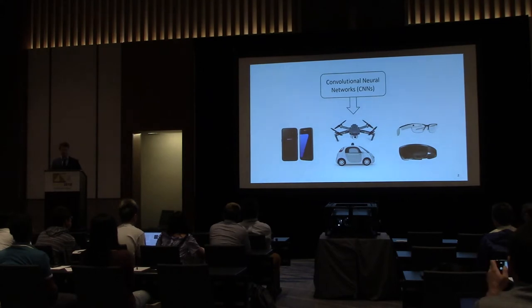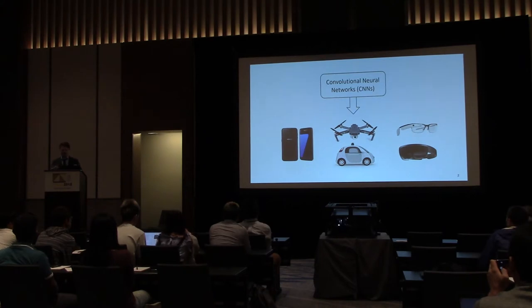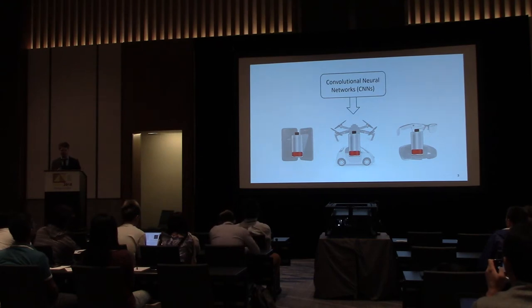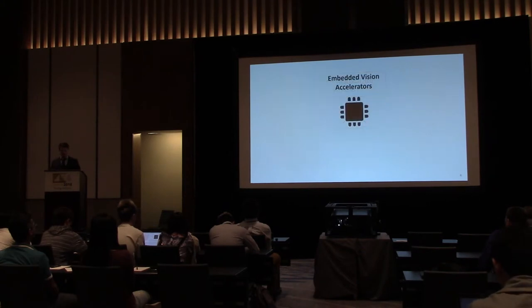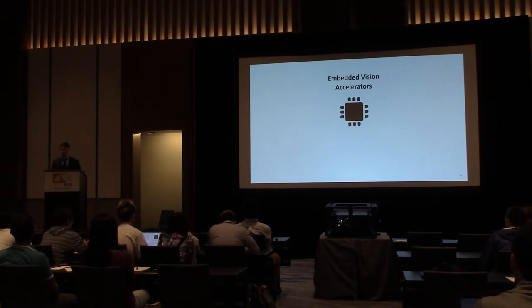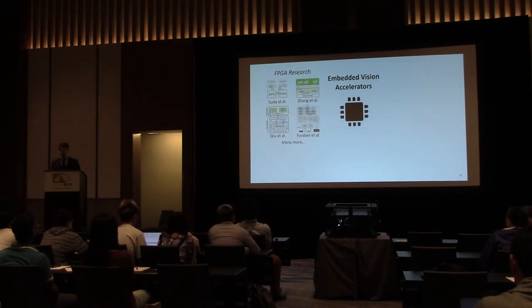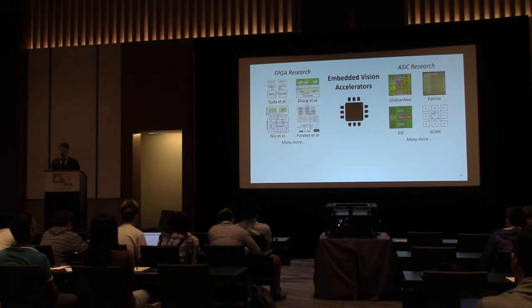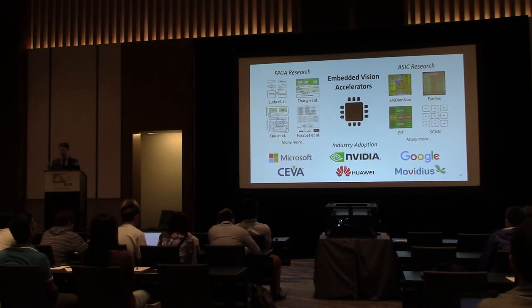A lot of attention has been paid to getting convolutional neural networks, CNNs, into various forms of embedded devices. The issue is that they're battery-powered, so energy usage is critical. There have been many recent works on embedded vision accelerators — hardware optimized specifically for computing CNNs for vision in mobile systems, including FPGAs and ASICs. Industry has now adopted this, with many companies having their own accelerators.